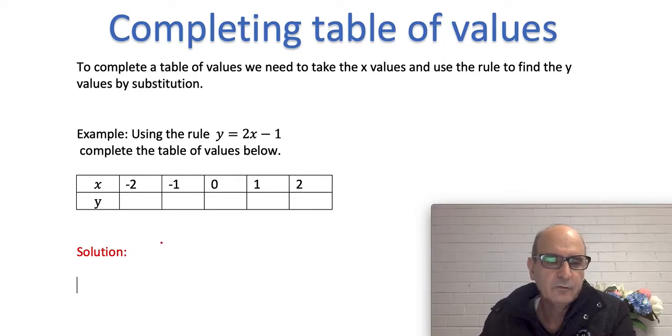To do that, we start with x equal to minus 2. All we are going to do is replace the x here in the rule with minus 2. Remember, 2x means 2 times x, so I got to put that times back. So I write y equals 2 times x, and x here happens to be minus 2. Then write the rest of the rule, then minus 1.